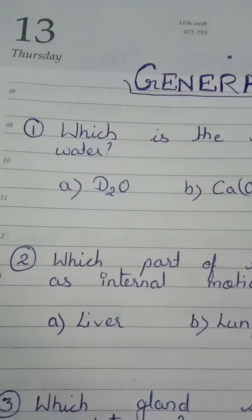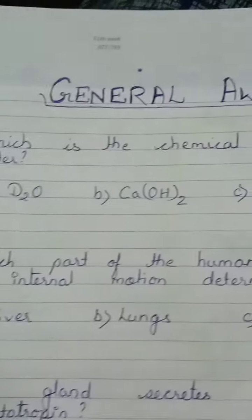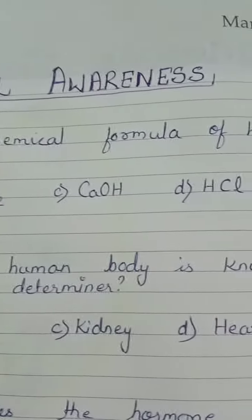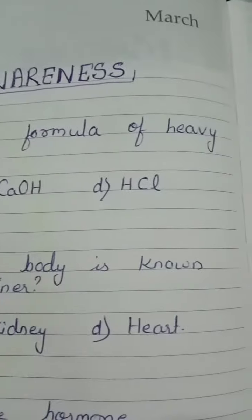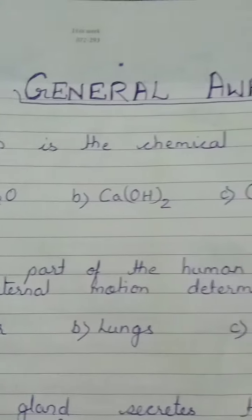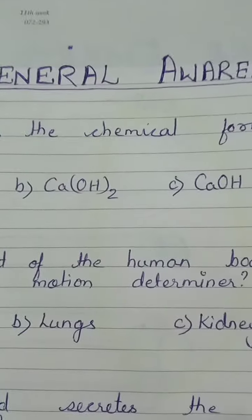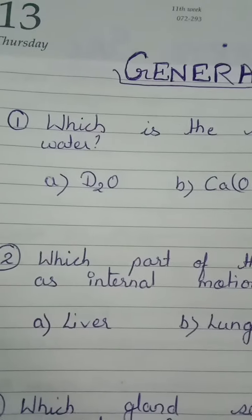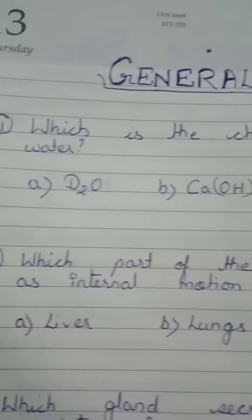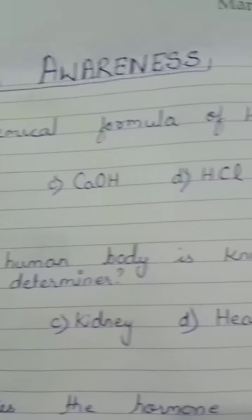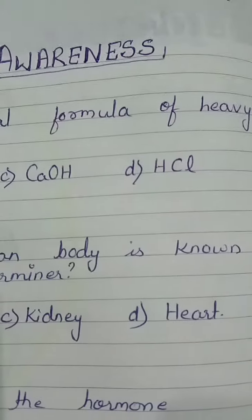Second question: which part of the human body is known as the internal motion determiner? Options: liver, lungs, kidney, heart.